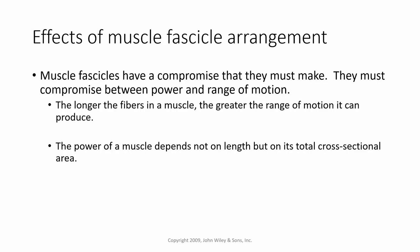Muscle fascicles must compromise between power and range of motion. The longer the fibers in a muscle, the greater its range of motion. The power of a muscle depends not on its length but on its total cross-sectional area — a long, thin muscle is not as powerful as a short, thick muscle. The greater the number of myofibrils with thick and thin sliding filaments, the stronger the muscle.